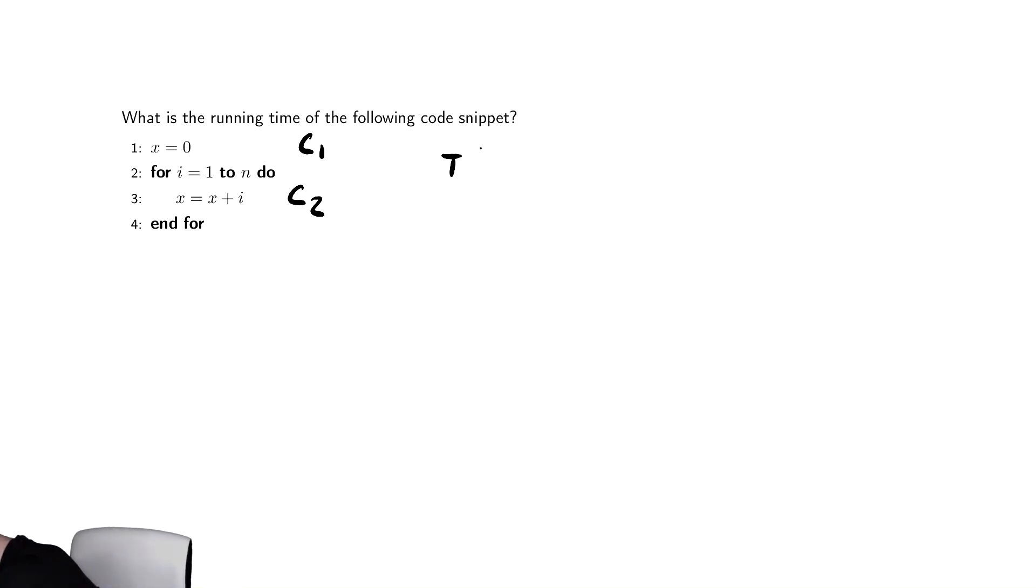So the time here, which now is going to be a function of n, will be the time it takes that first line of code, plus just like we saw before when it ran 25 times, this runs n times. This is n times C2.